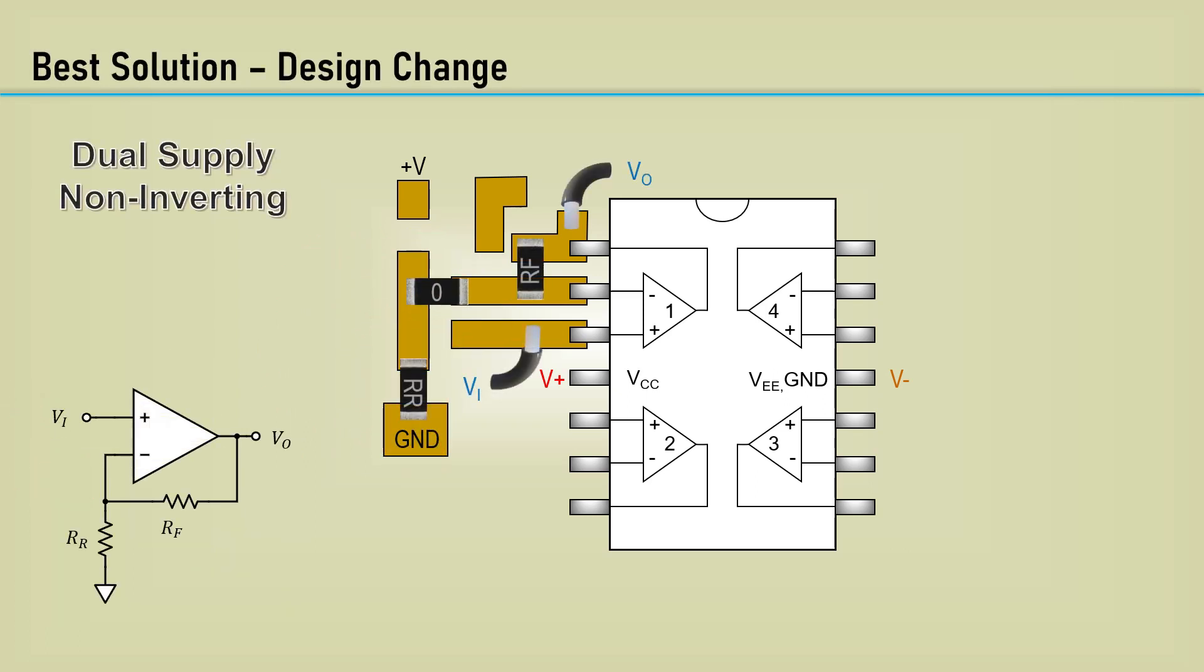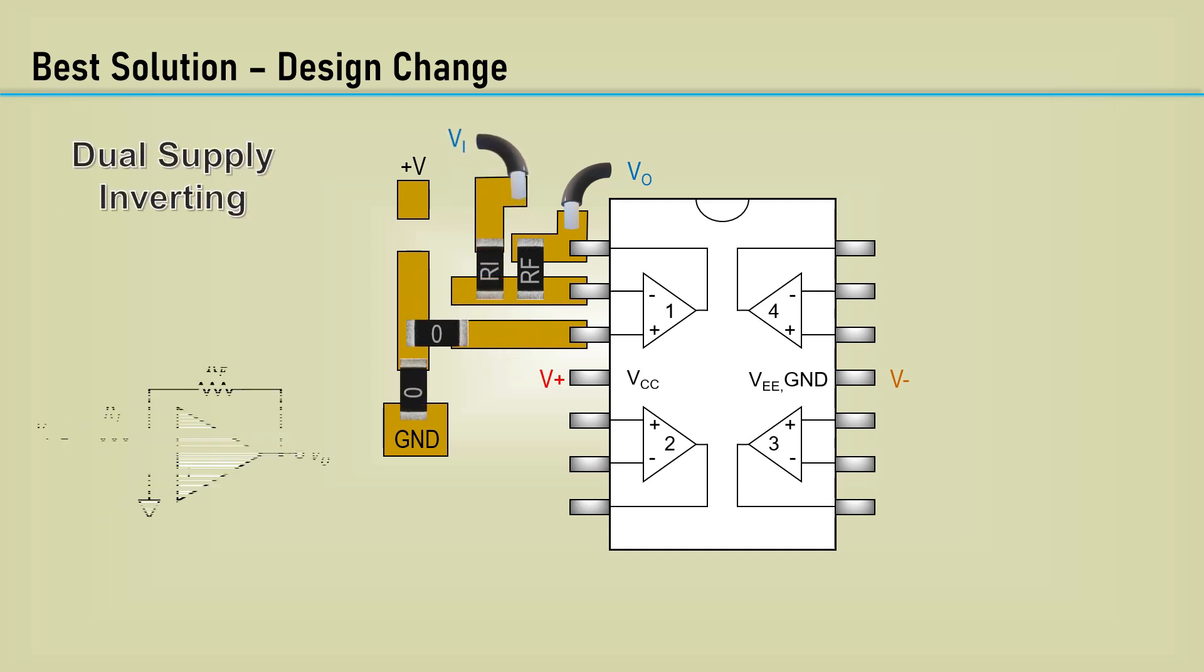This layout helps to facilitate a potential design change to utilize the amplifier section. Here's the case of a non-inverting amplifier for the feedback resistors RF and RR. You can wire into the pads for the input and output. Same goes with the inverting amplifier having feedback resistors and the non-inverting input grounded. These amplifier sections can also be connected for single supply operation.